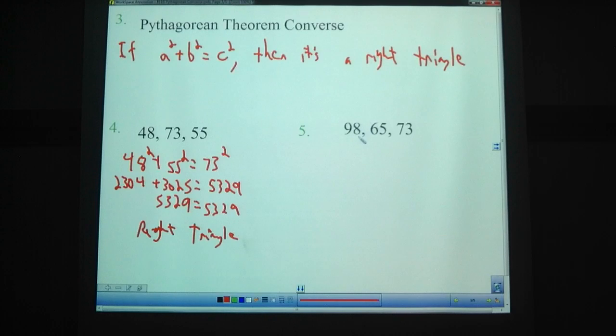Number 5, on the other hand. We've got 98, 65, 73. So that 98 has to go last. 65 squared plus 73 squared equals 98 squared. 65 squared, that is 4,225. 73 squared, 5,329. 98 squared, 9,604. Now we add these two together. 9,554 and 9,604. Are those equal? No, they are not. That means this one is not a right triangle.